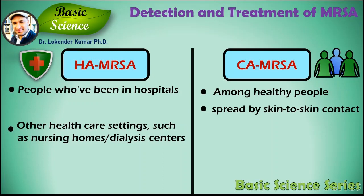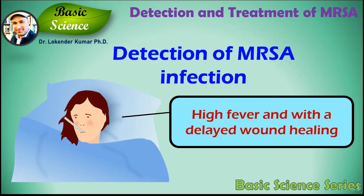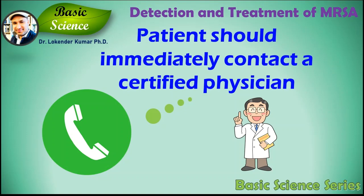Community-acquired MRSA is spread by skin-to-skin contact. At-risk populations include groups such as high school wrestlers, childcare workers, and people who live in crowded conditions. When a patient is feeling high fever with delayed wound healing, that could be the first sign of MRSA infection.